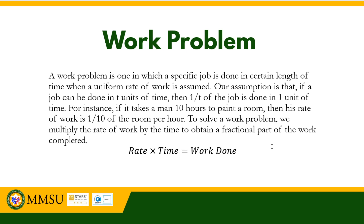For instance, if it takes a man 10 hours to paint a room, then his rate of work is 1 over 10 of the room per hour. To solve a work problem, we multiply the rate of work by the time to obtain a fractional part of the work completed. That's rate times time is equal to the work done.